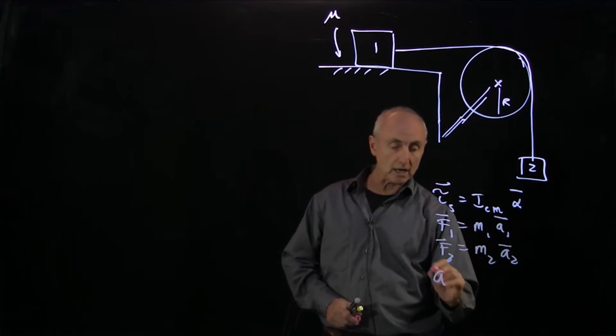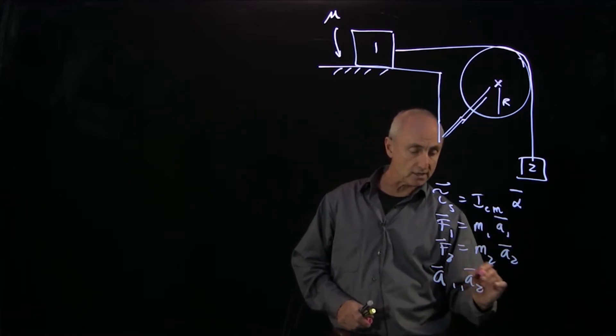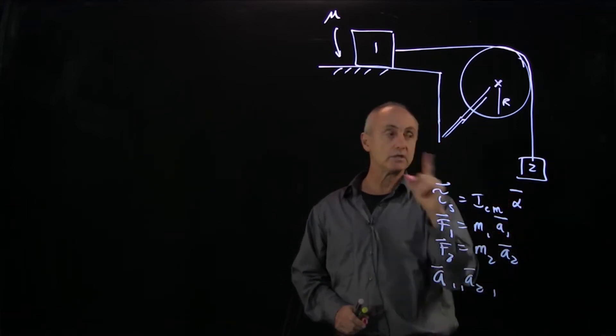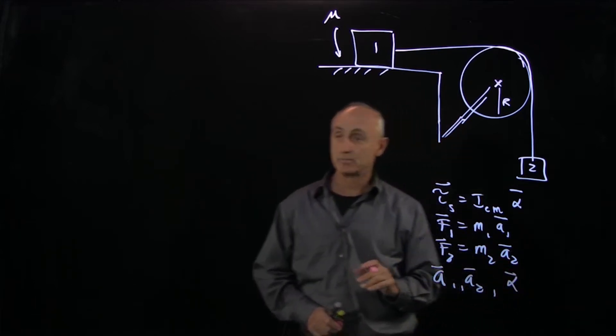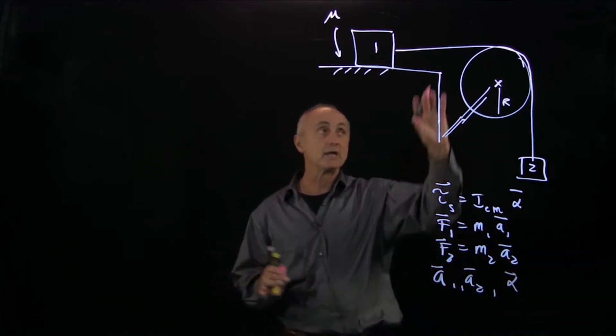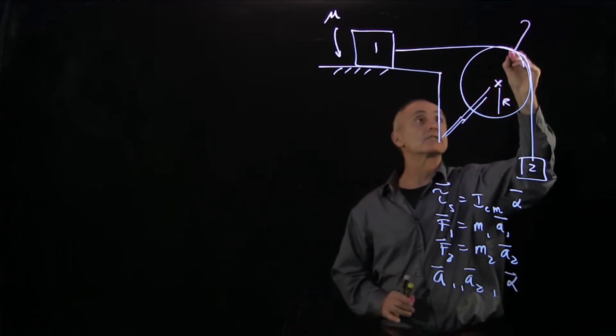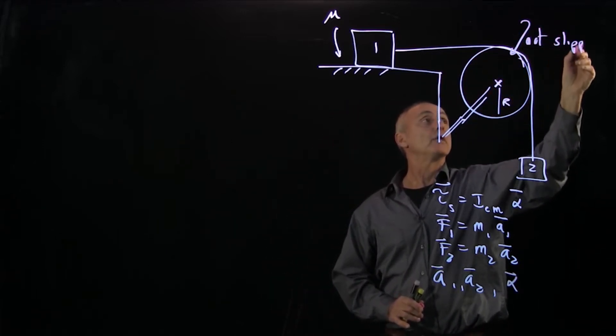But the important thing to realize is that these three quantities - the acceleration of block 1, the acceleration of block 2, and the angular acceleration of the pulley - are constrained because the string is not slipping around the pulley.